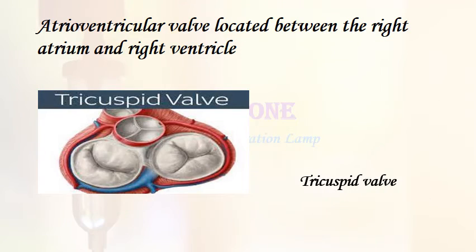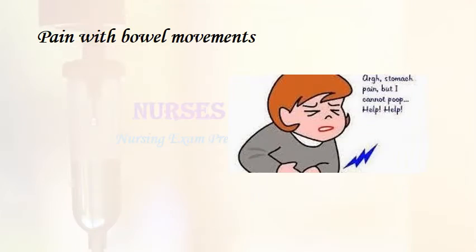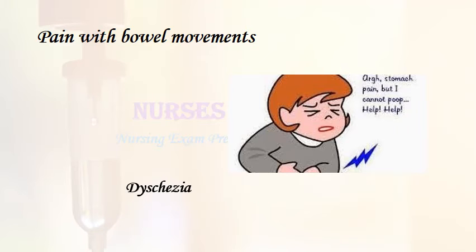Atrioventricular valve located between the right atrium and right ventricle: tricuspid valve. Pain with bowel movements: dyschezia.